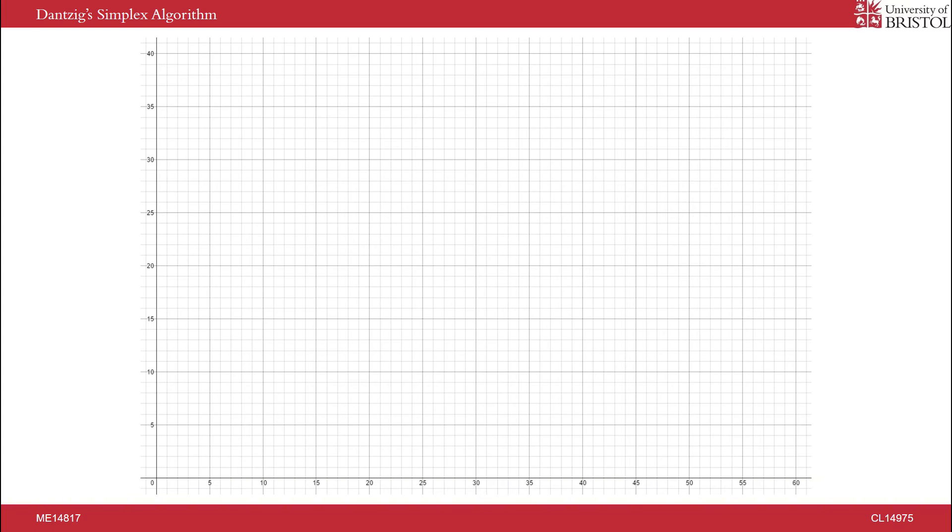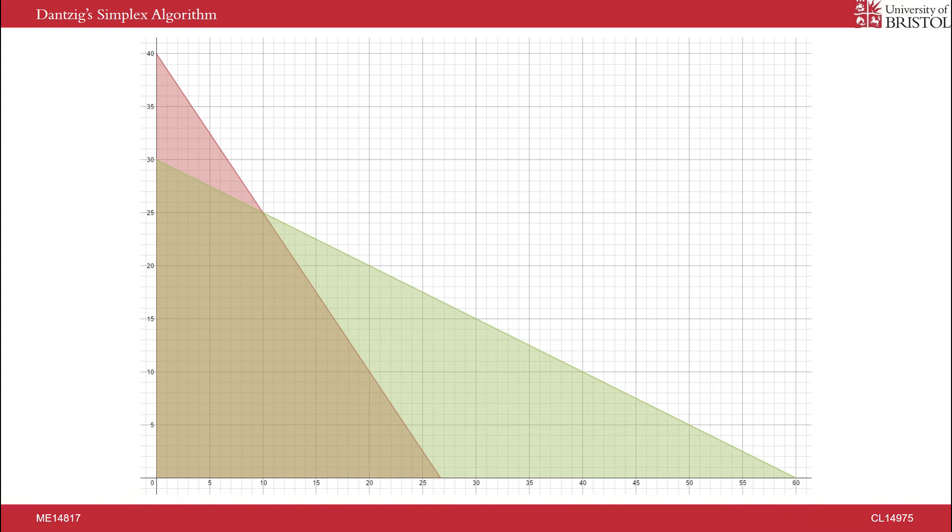This can be visualized graphically by plotting the two constraints to find the area known as the feasible region. This region contains all potential solutions that satisfy the constraints. We can find the optimal solution to the problem by plotting our objective function and sliding it along the region until we find the point at which it leaves. In this case, it leaves the region at point 10, 25. So our factory should produce 10 X products and 25 Y products.